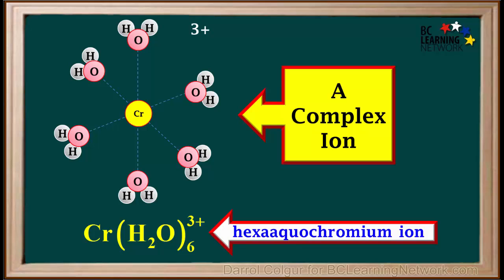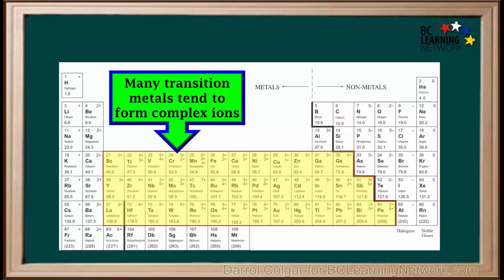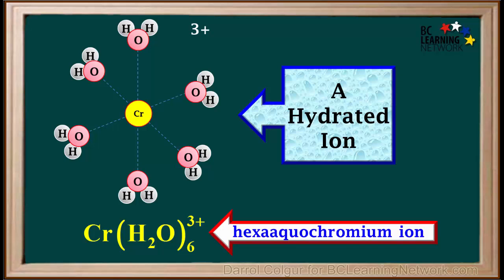An ion composed of a central metal atom, surrounded by a number of other groups weakly bonded to it, is called a complex ion. Transition metals are found in the center section of the periodic table. Many of these tend to form complex ions. When the groups surrounding the central atom are all water molecules, a complex ion can also be called a hydrated ion.